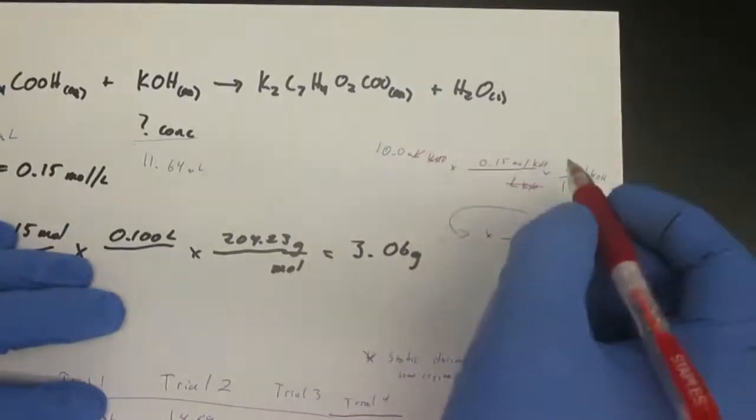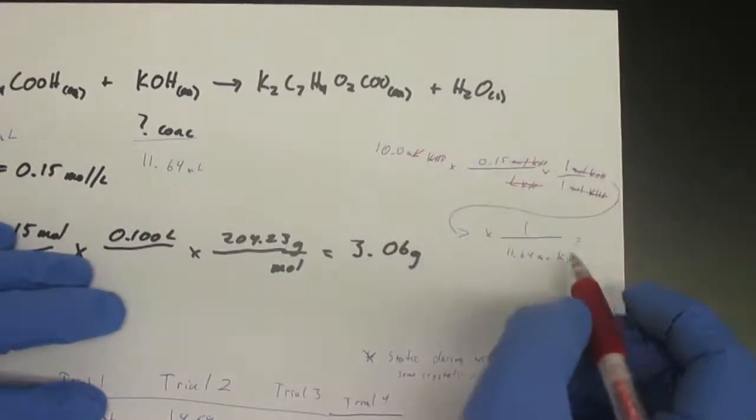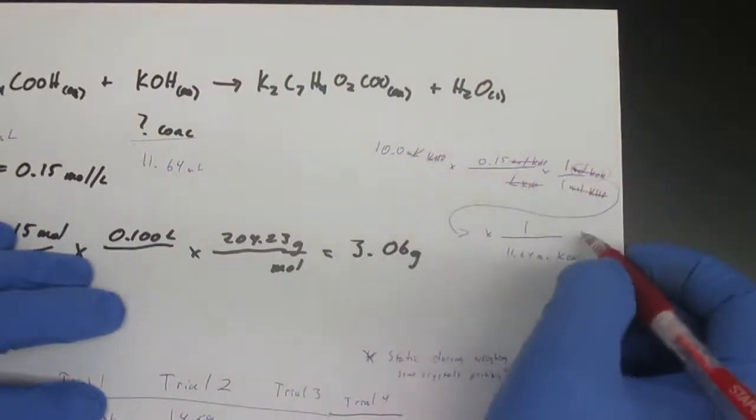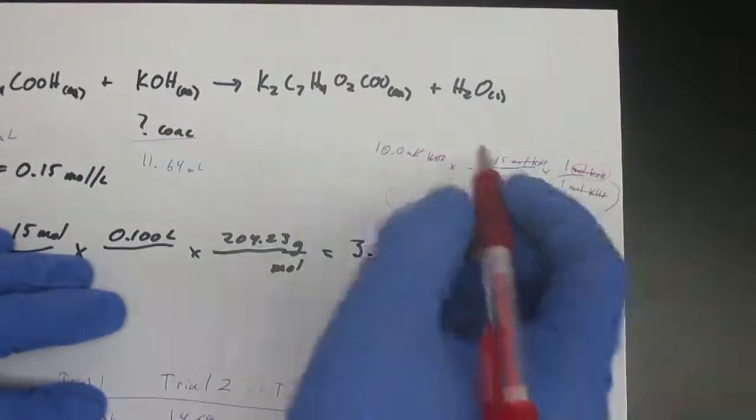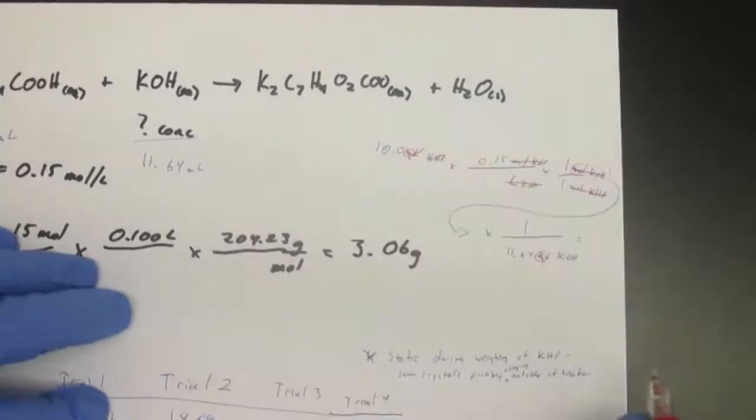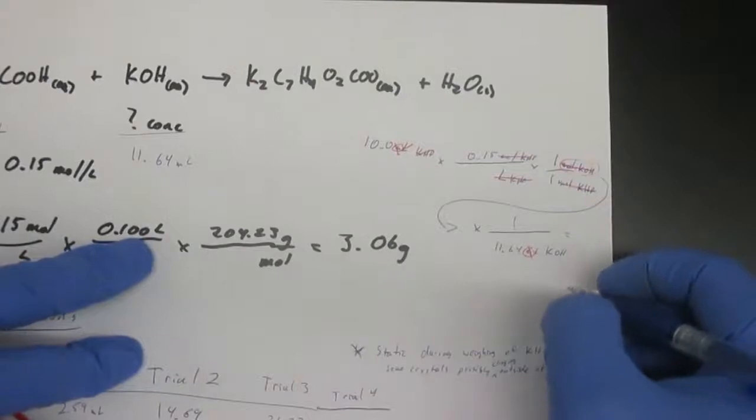Just to look at our units here: we have milliliters of KHP—I'm going to actually cross out the liters of KHP with liters of KHP. We have moles of KHP with moles of KHP. We have moles of potassium hydroxide and milliliters of potassium hydroxide. The milli here and the milli here can actually cancel, so we are left with moles per liter as our desired units.